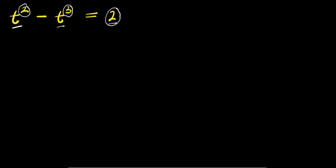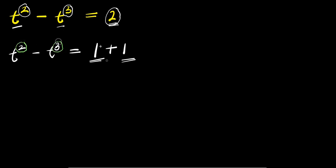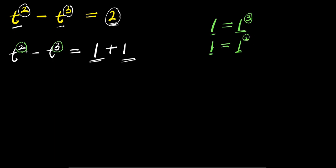What I can do will be to express the 2 as a sum of 1 and 1. So I have t² minus t³ equals 2, which is simply 1 plus 1. Now, having in mind that there is power 2 here and power 3 here, I can express one of those 1s as 1 to the power of 3, and the other as 1 to the power of 2, because 1³ = 1 and 1² = 1.